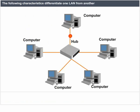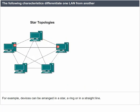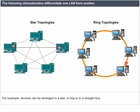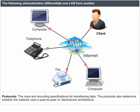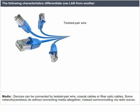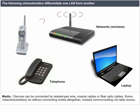The following characteristics differentiate one LAN from another. Topology: the geometric arrangement of devices on the network — for example, devices can be arranged in a star, a ring, or in a straight line. Protocols: the rules and encoding specifications for transferring data; protocols also determine whether the network uses a peer-to-peer or client-server architecture. Media: devices can be connected by twisted pair wire, coaxial cables, or fiber-optic cables. Some networks (wireless) communicate via radio waves without connecting media.